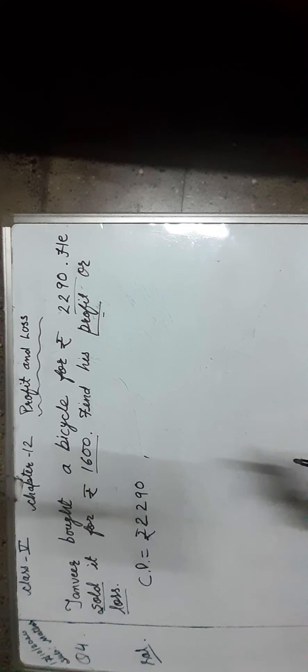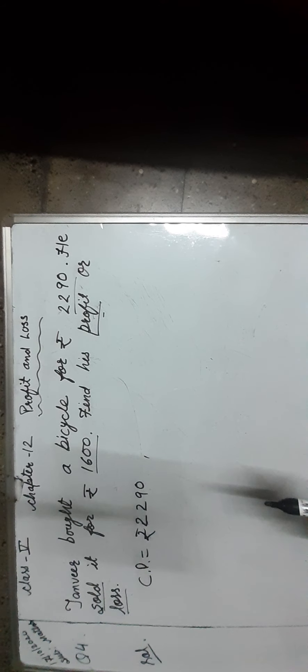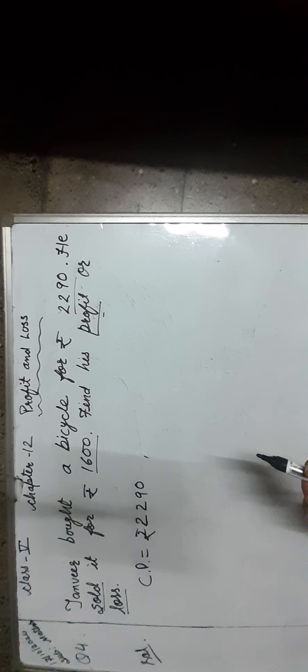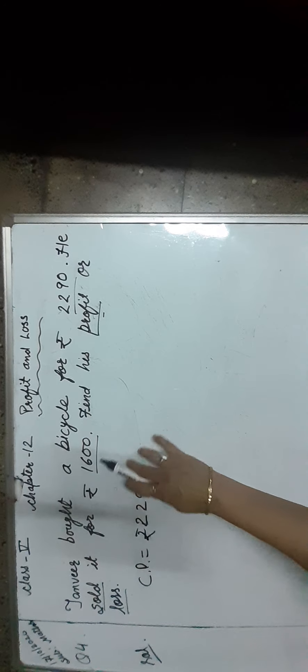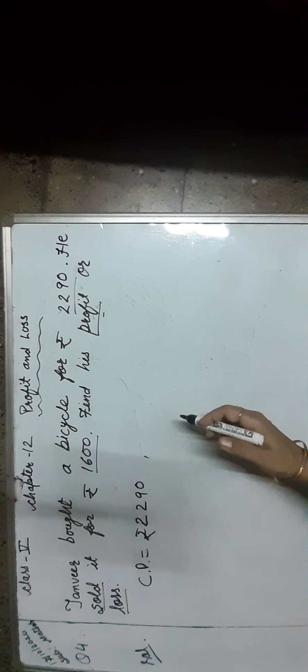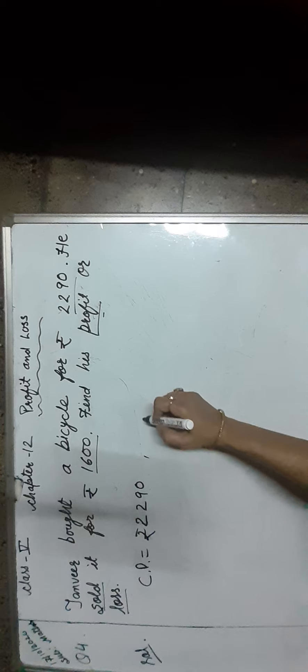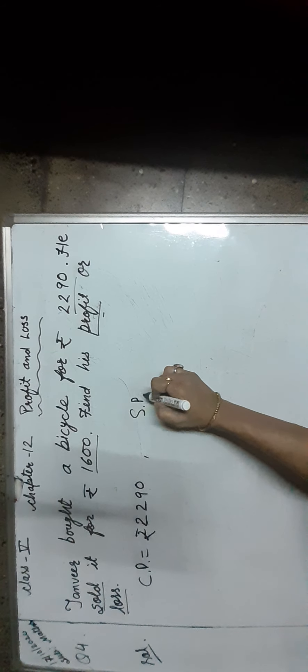Now find out and identify the selling price. As you know, the price at which goods are sold is known as its selling price. So students, what price did Tanvir sell the bicycle? Yes, it is Rs. 1,600. So it has to be the selling price of the bicycle. So SP is equal to Rs. 1,600.